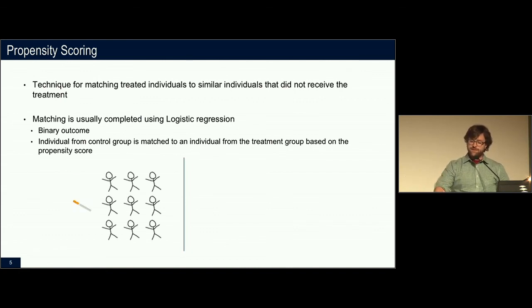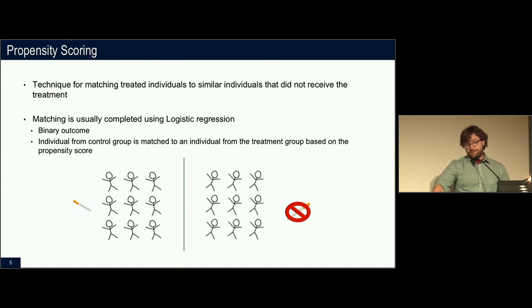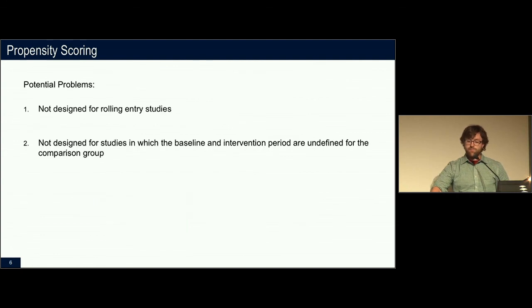But propensity scoring has some issues as well. And I forgot that I had pictures at the bottom. But basically, if we had nine people that smoked, we could find a group of nine people that do not smoke and match them based on some probability. But propensity scoring has some issues.